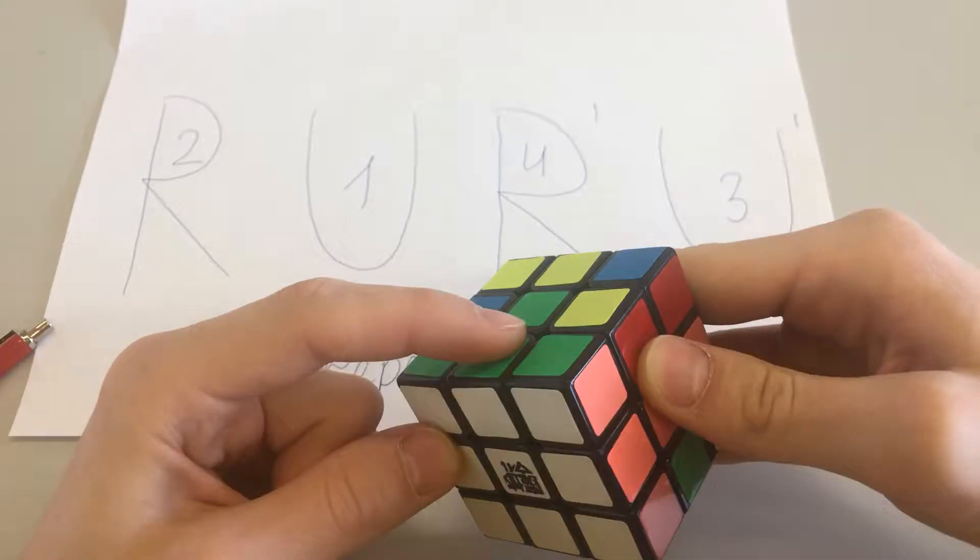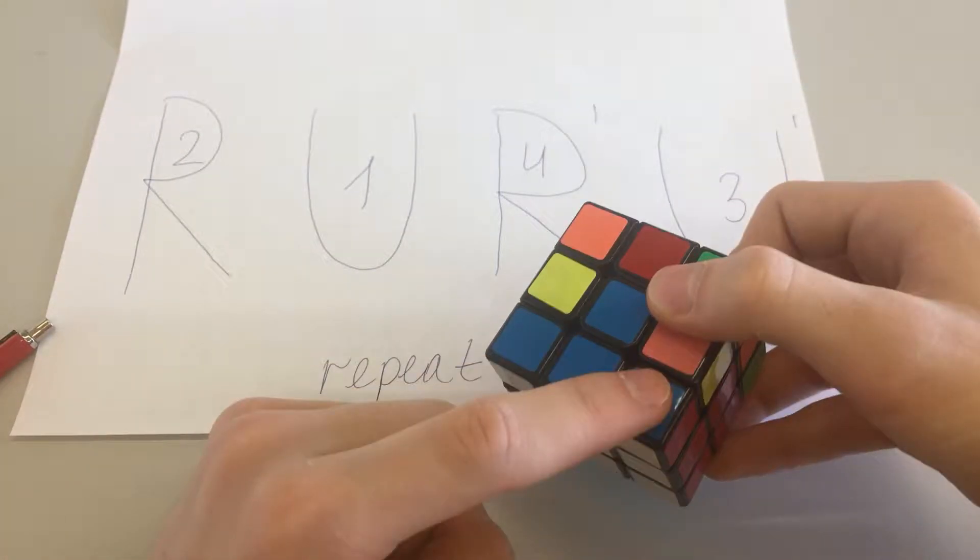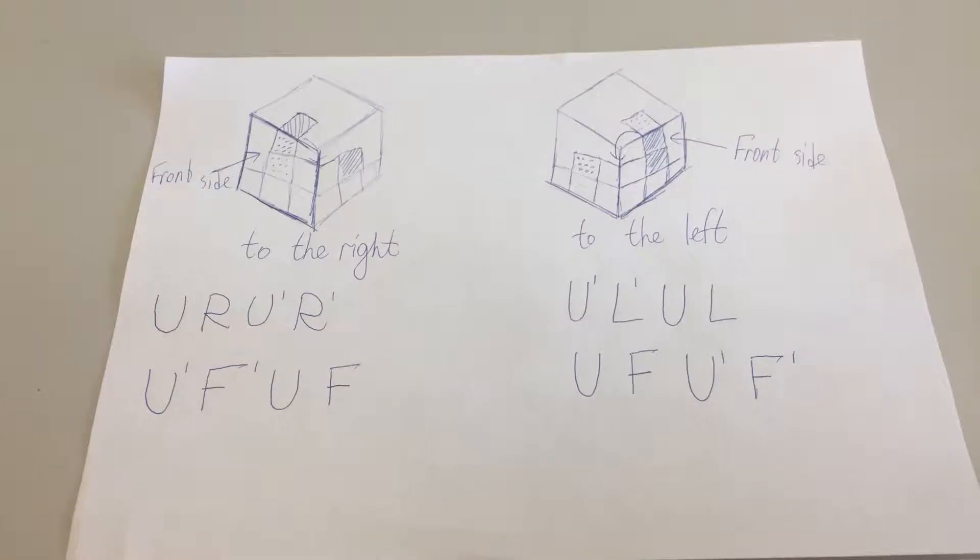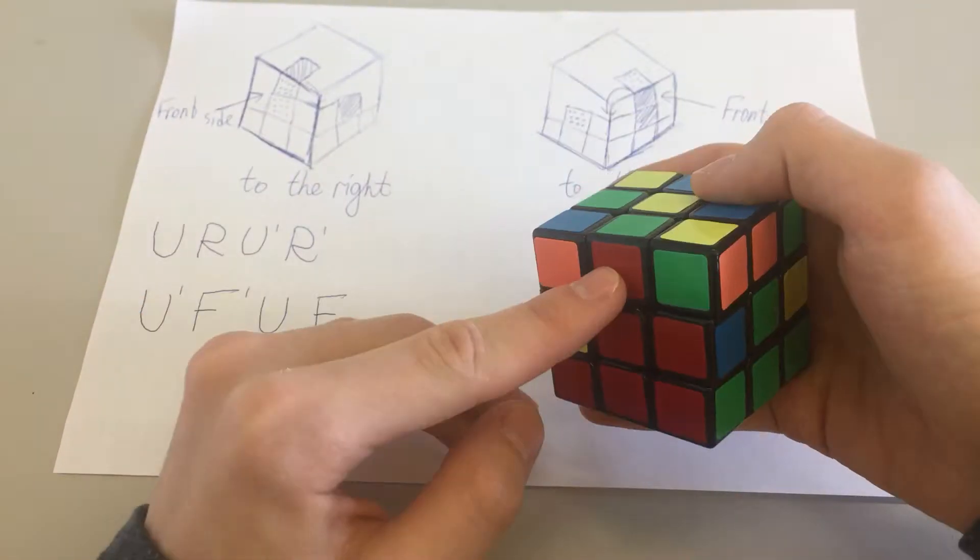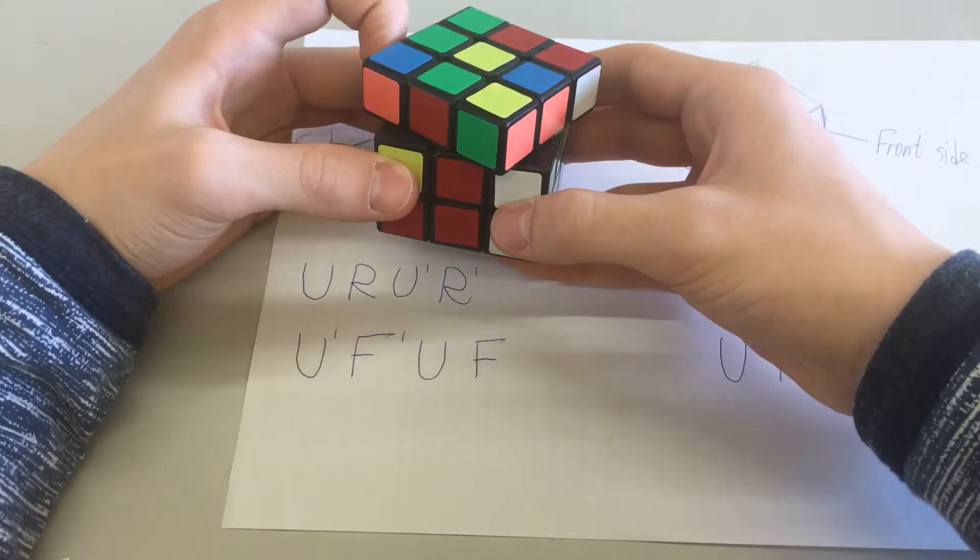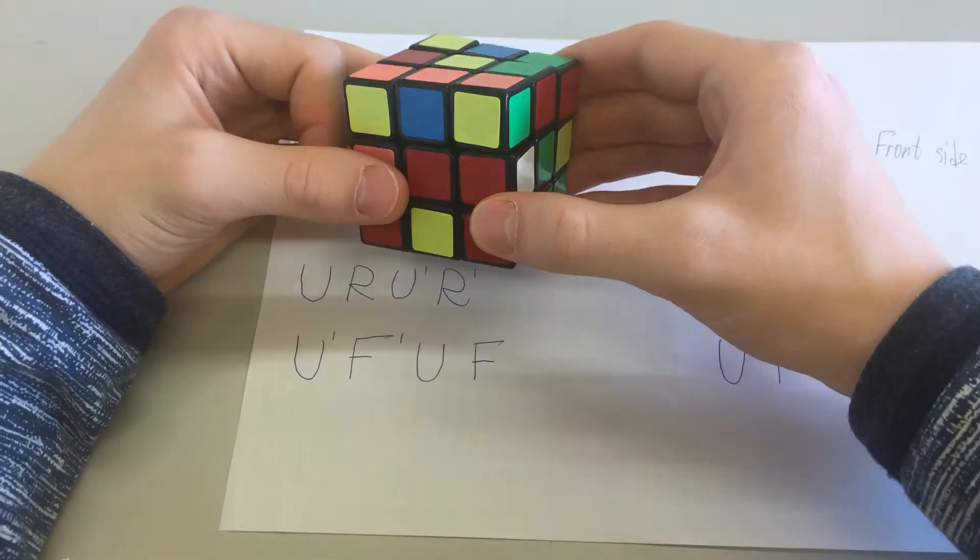Congratulations, you've solved the correct first side. Now, you do the next step, second row. For that, you need 2 algorithms depending on the side you need to turn it to. You can see examples in the video.